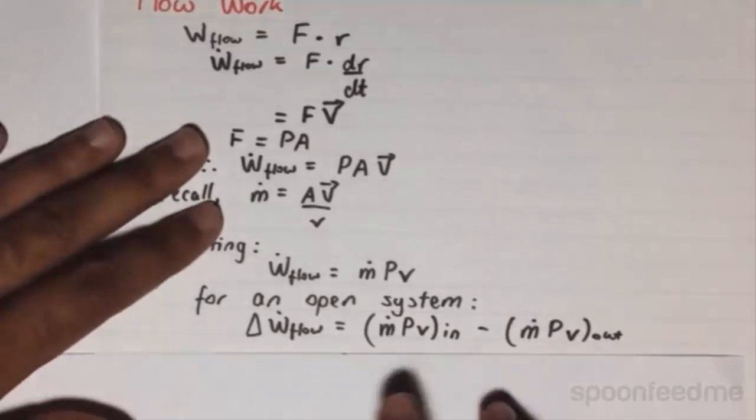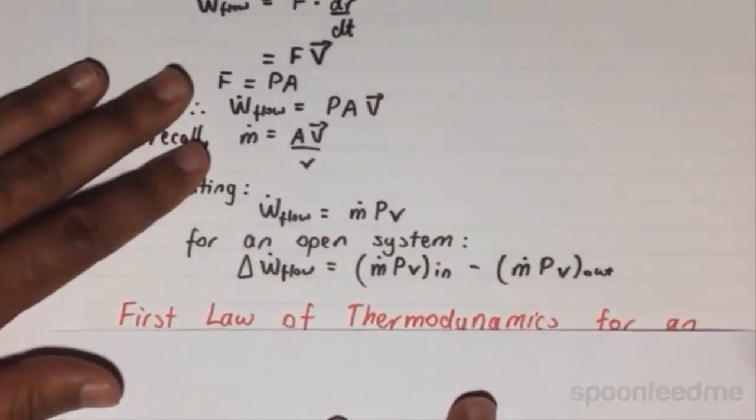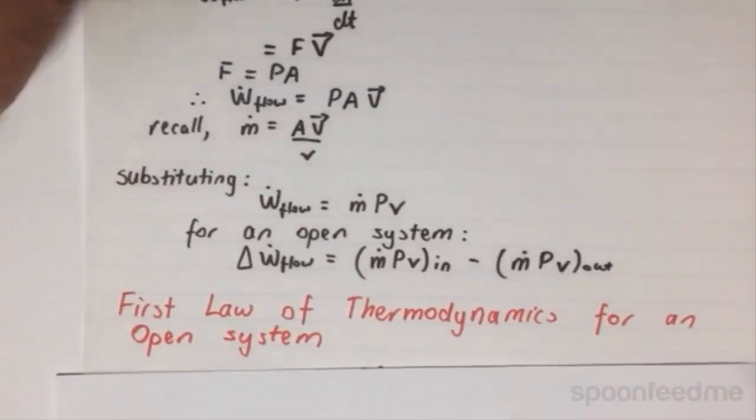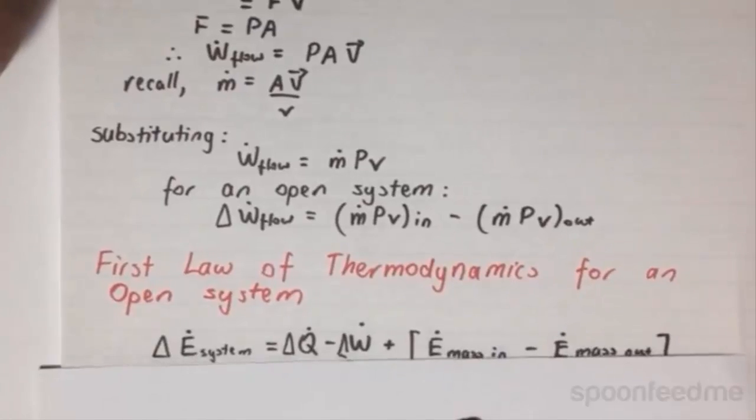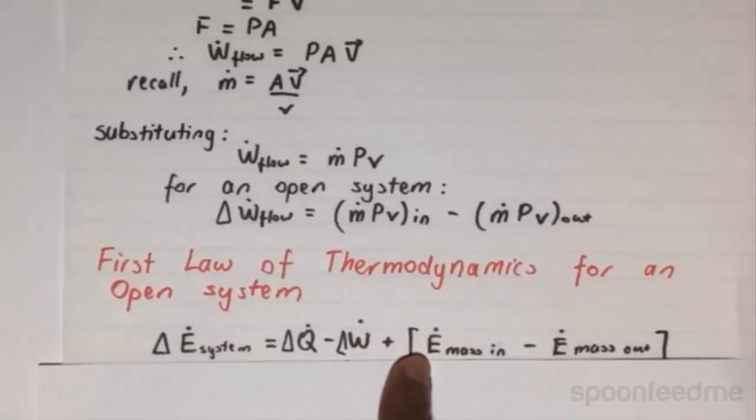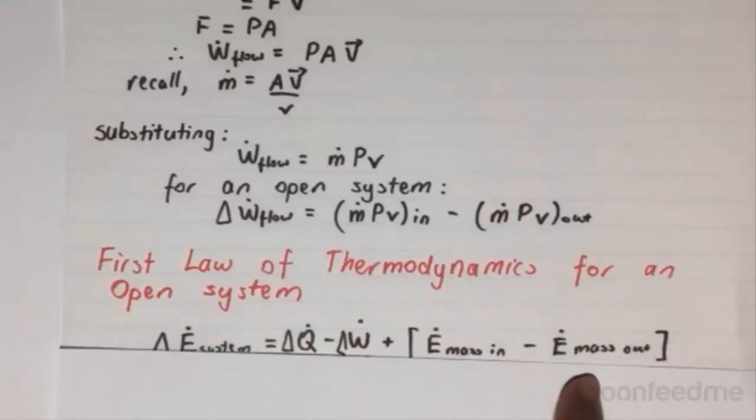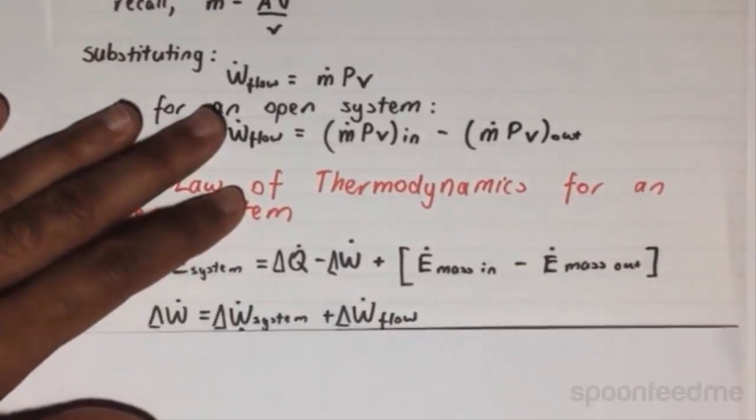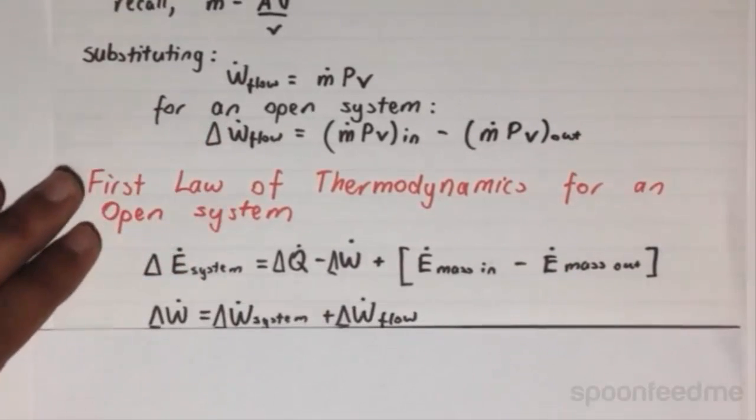The culmination of all this theory is to find the first law of thermodynamics for an open system. The change in energy flow rate of a system equals the change in Q̇ minus the change in Ẇ plus the energy of the mass in minus the energy of the mass out. Work dot is easily split into the work done externally onto the system and the work done by the flow itself.